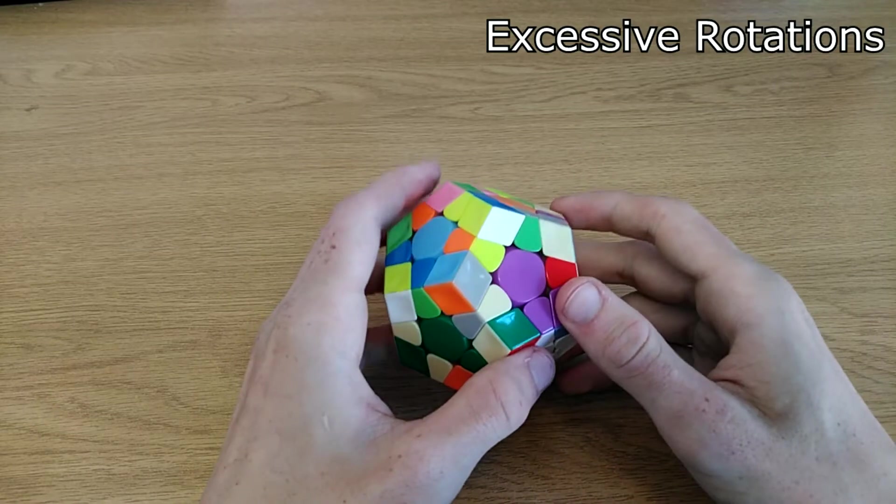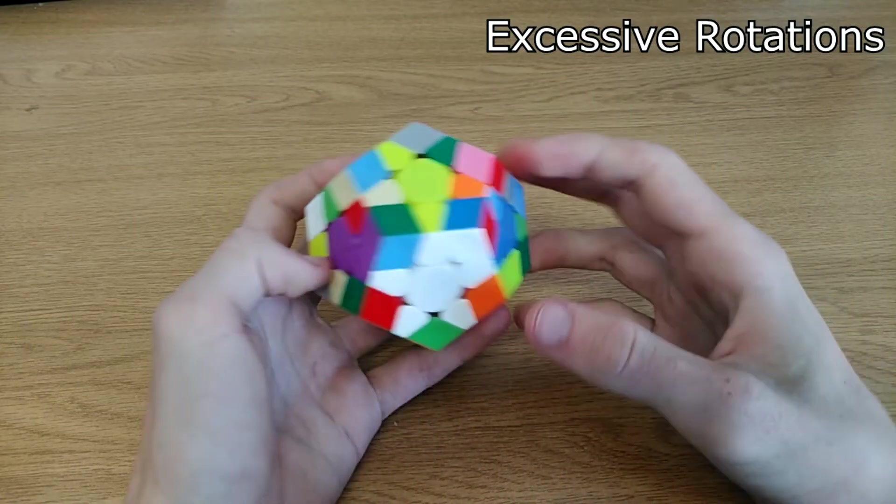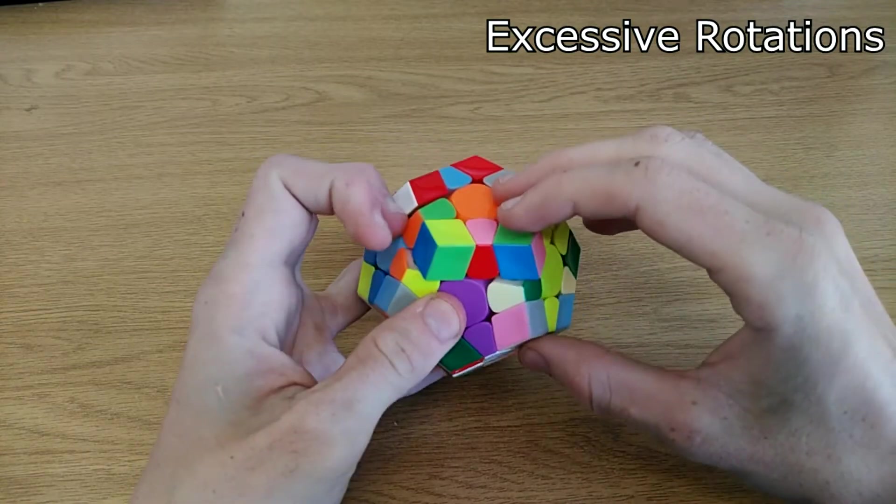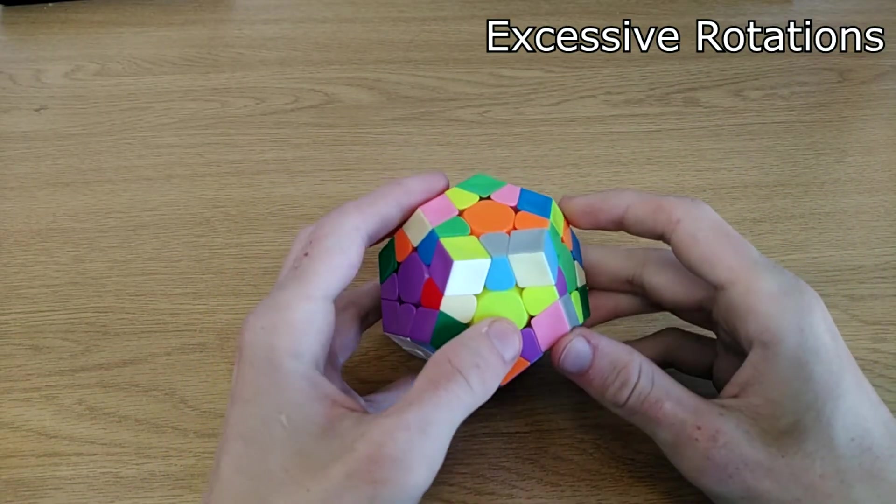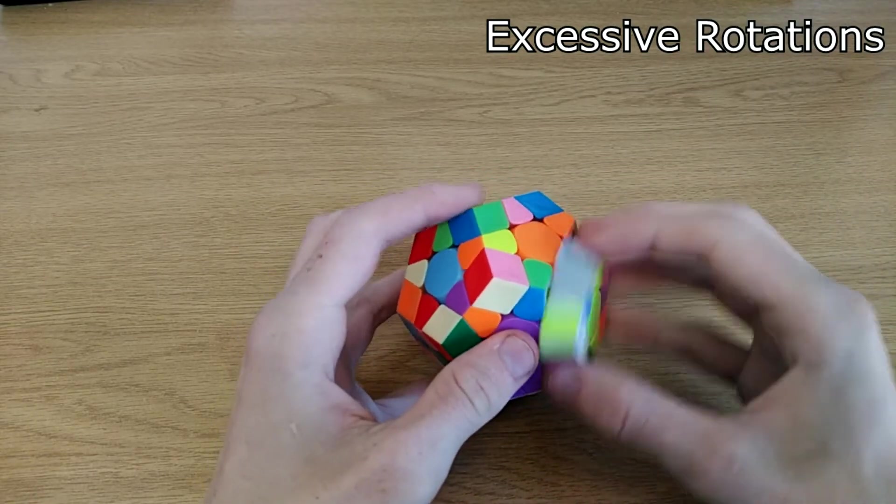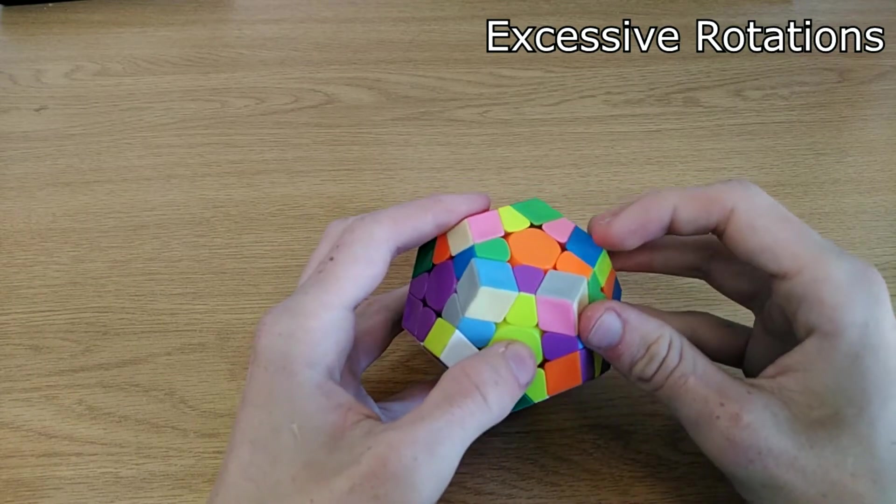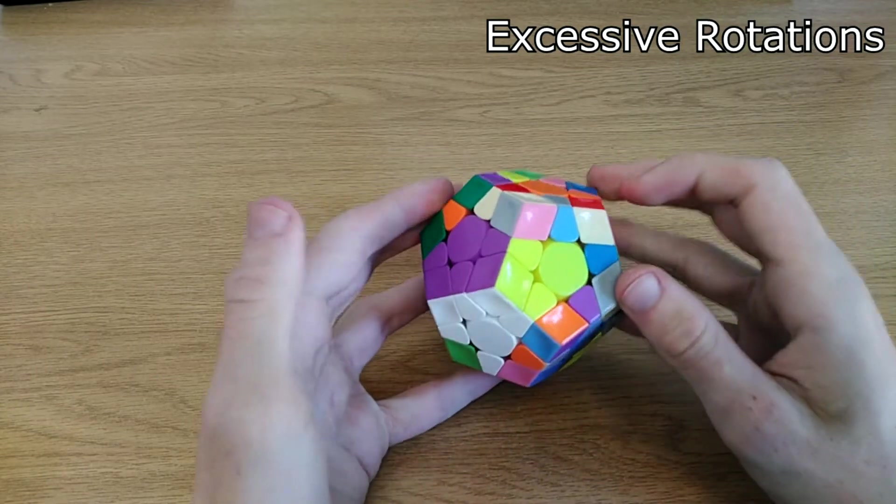There are many different ways to avoid rotations. One simple one is to insert pairs in the back. So instead of rotating all the way to the back, you just insert it like this. Another common way to reduce the rotations is to use more F moves in your solution. So for instance in this case, instead of rotating and pairing it up like this, you can just use these F moves to pair them like that, and that avoids one rotation.